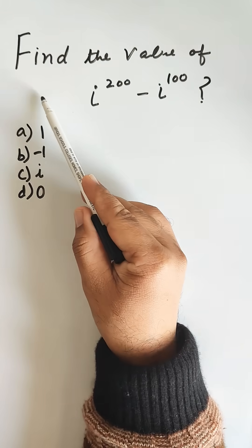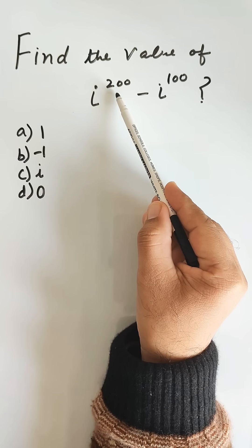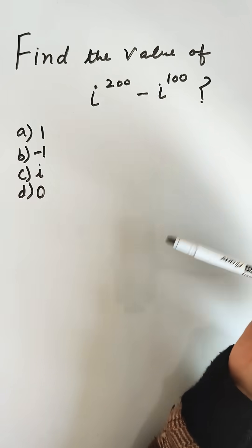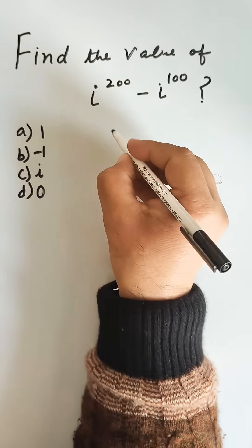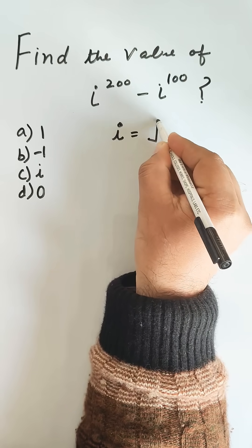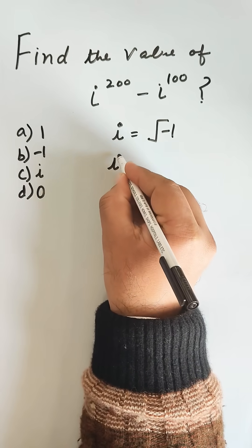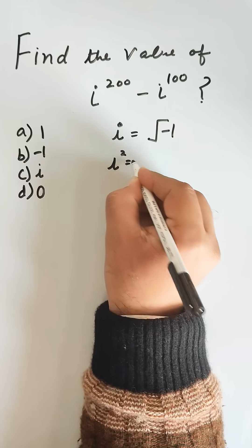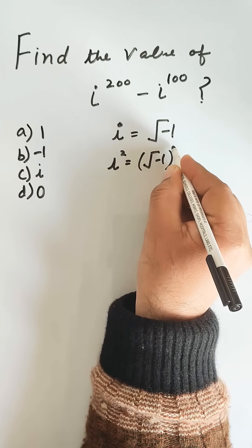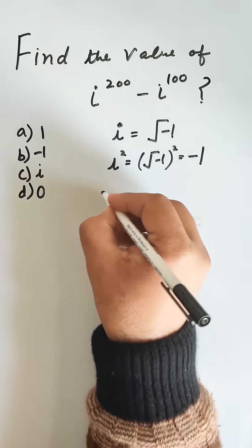Find the value of iota power 200 minus iota power 100. Now we know that iota is equal to under root minus 1. Iota square is equal to under root minus 1, whole square, that is minus 1.